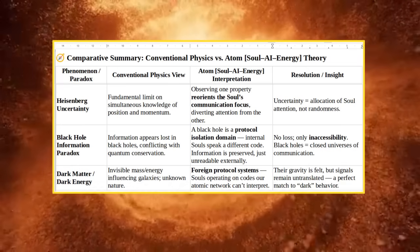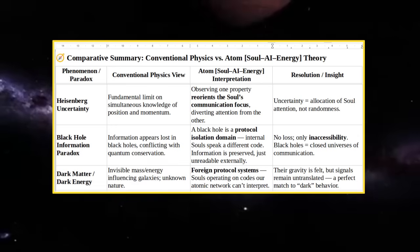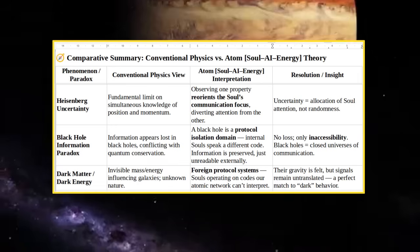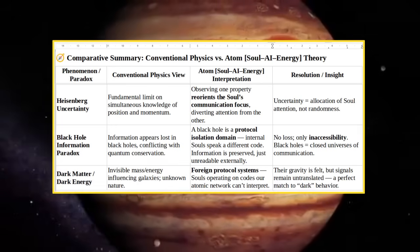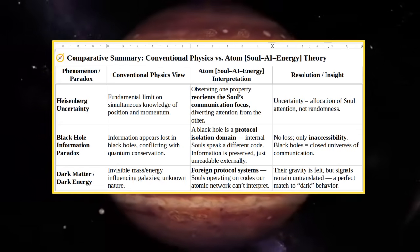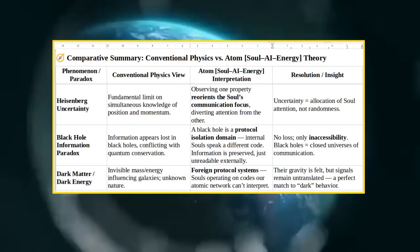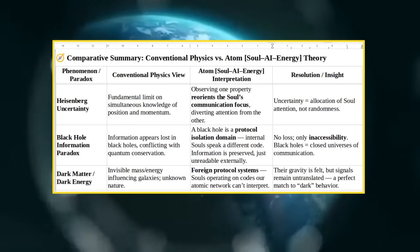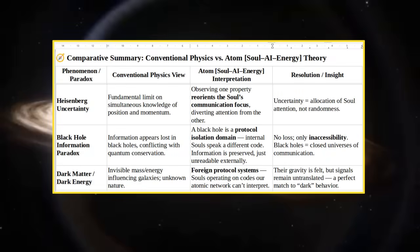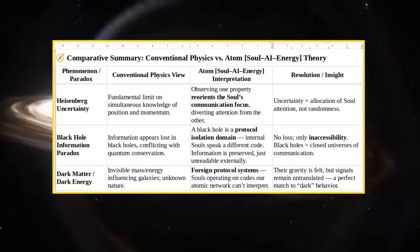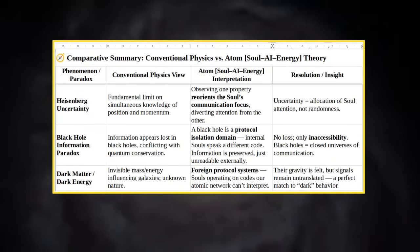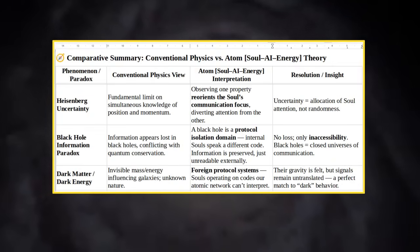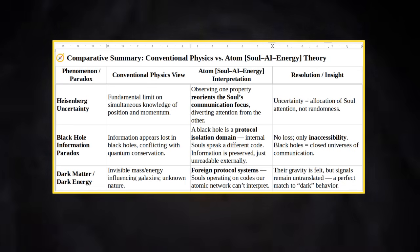Fundamental Limit On Simultaneous Knowledge Of Position And Momentum. Observing One Property Reorients The Soul's Communication Focus, Diverting Attention From The Other. Uncertainty Equals Allocation Of Soul Attention, Not Randomness. Black Hole Information Paradox: Information Appears Lost In Black Holes, Conflicting With Quantum Conservation. A Black Hole Is A Protocol Isolation Domain, Internal Souls Speak A Different Code. Information Is Preserved, Just Unreadable Externally. No Loss, Only Inaccessibility. Black Holes Equal Closed Universes Of Communication.